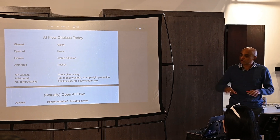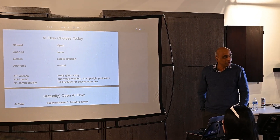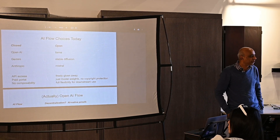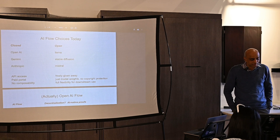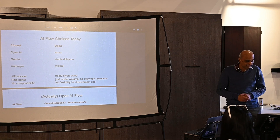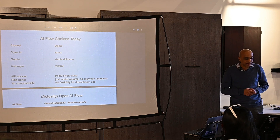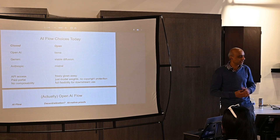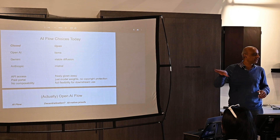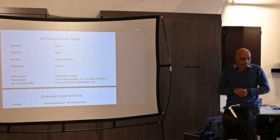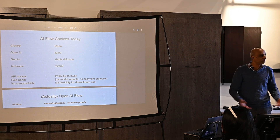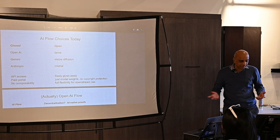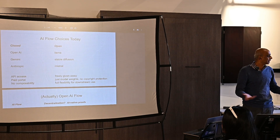There are two types of AI flows. There is the closed one — OpenAI, go figure — and then Gemini. They give you API access, a paid portal. There's no composability; you just have your own flow. Then there's the open one — actual open AI — where model weights are just released, freely given away. You can do whatever you want with it. Full flexibility for any further use.